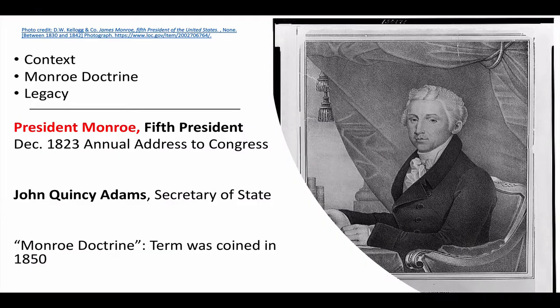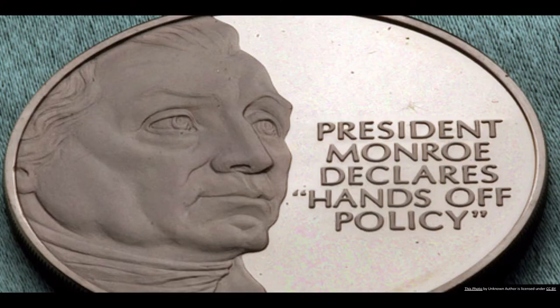The doctrine that Bolton cited dates back to the presidency of James Monroe, the fifth president of the United States. In his annual message to Congress in December 1823, President Monroe forewarned European nations against interfering in the affairs of newly independent Latin American nations. This portion of the address about U.S. foreign affairs is known as the Monroe Doctrine. Although the statements were made by President Monroe, the policy was actually drafted by John Quincy Adams, who was his Secretary of State. This declaration of policy did not become known as the Monroe Doctrine until 1850. Many contemporary American newspapers praised the president's statements on foreign affairs.